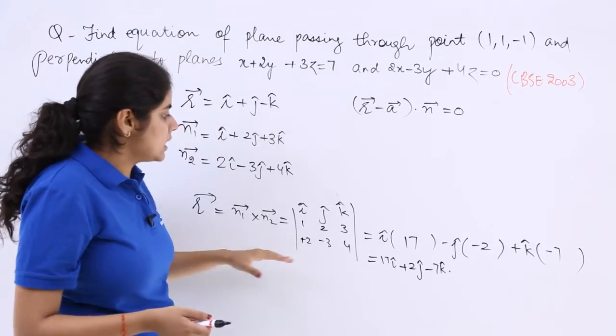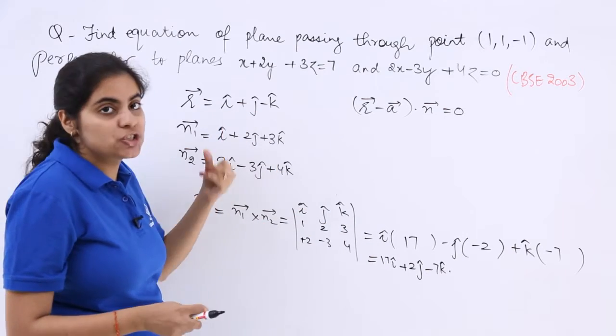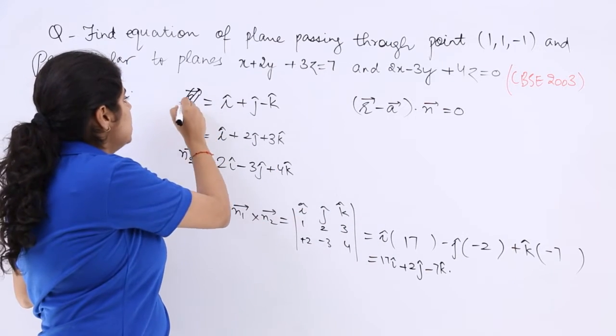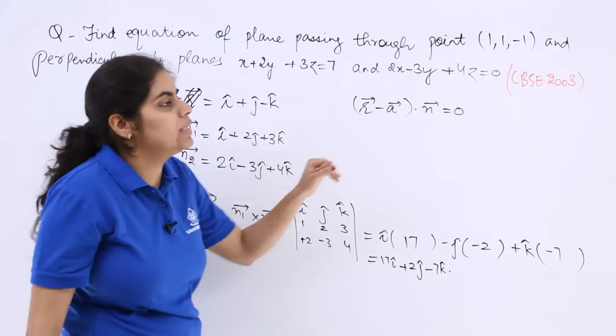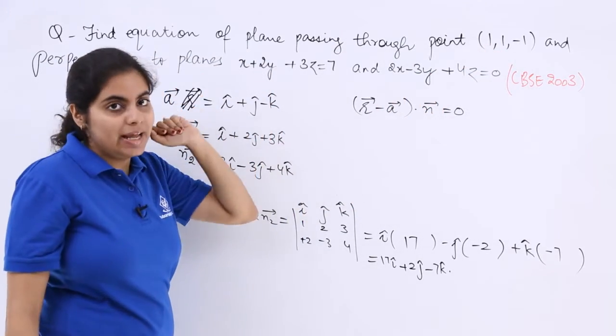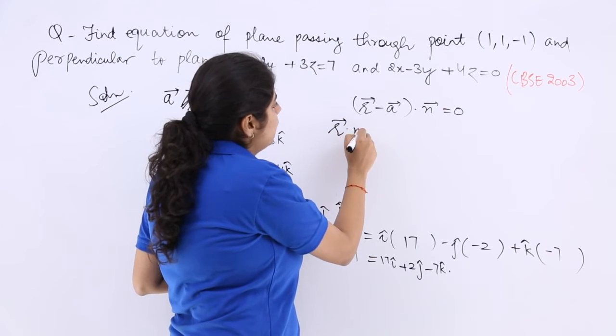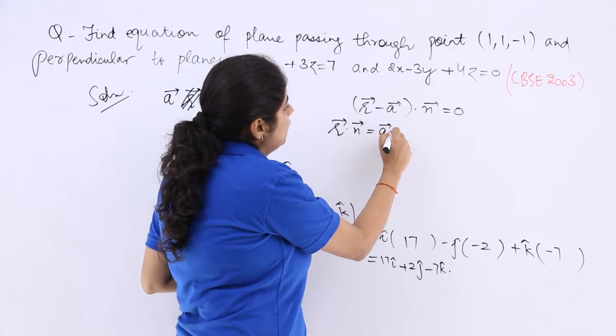As you know, this is r vector, then minus a vector. a vector is the passing through the point vector. So we can also do it like r vector dot n vector equals a vector dot n vector.